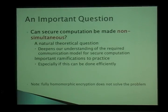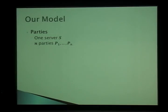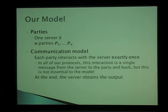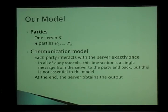Fully homomorphic encryption doesn't solve the problem — you can think about who owns the key. Our model is as follows: we have n parties P1 through Pn and one server S. Each party interacts with the server exactly once — you come, interact, and go away. In our protocols, this interaction is essentially just retrieving something from the server and sending it back. What is important is that you carry out your computation on your input and then leave, without needing to speak to anyone else or worry about when other parties are online.